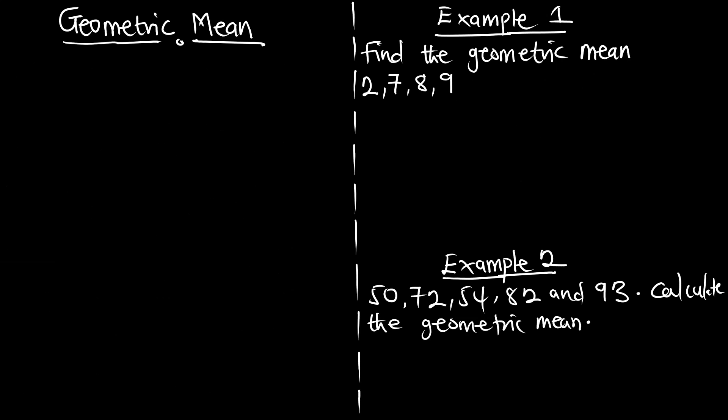In this episode we are going to talk about the geometric mean, which is another form of finding the mean of a given data. We have arithmetic mean, and this episode focuses on the geometric mean. When we have univariate variables x1, x2, x3 up to xn, and these are discrete random variables, we have to calculate the geometric mean. These are ungrouped variables.